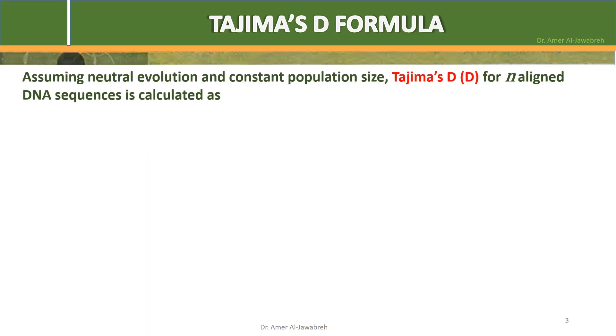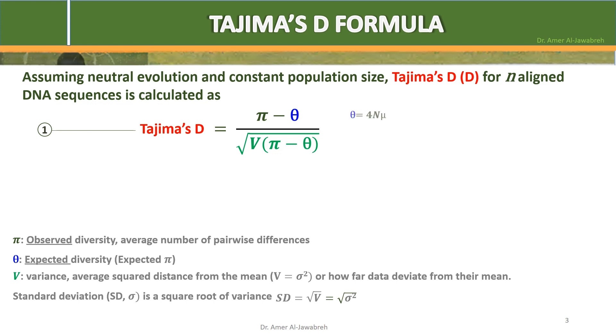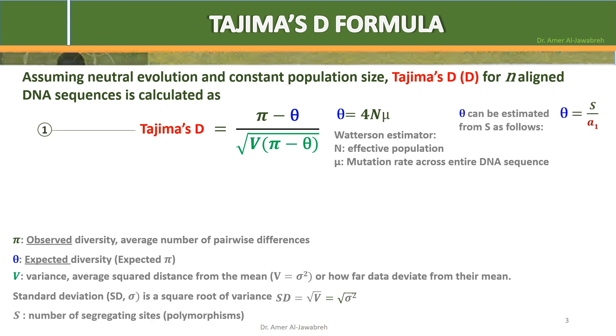Tajima's Formula. Assuming neutral evolution and constant population size, Tajima's D for N-aligned DNA sequences is calculated as: Tajima's D equals the difference between observed diversity pi and expected diversity theta over the square root of the variance of that difference between pi and theta. Theta equals 4N mu, where N is effective population and mu is mutation rate across entire sequence. Theta can be estimated from S, which is the number of segregating sites, as follows: theta equals S over A1. A1 equals the sum of 1 over I as I runs from 1 to N-1, where N is the number of sequences and I is any given DNA sequence.